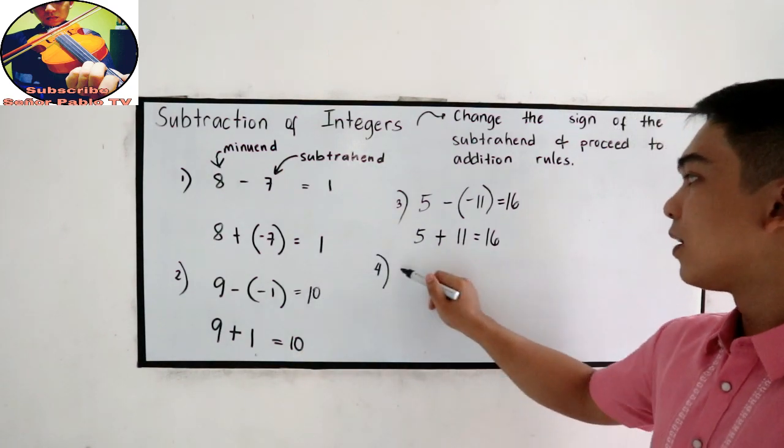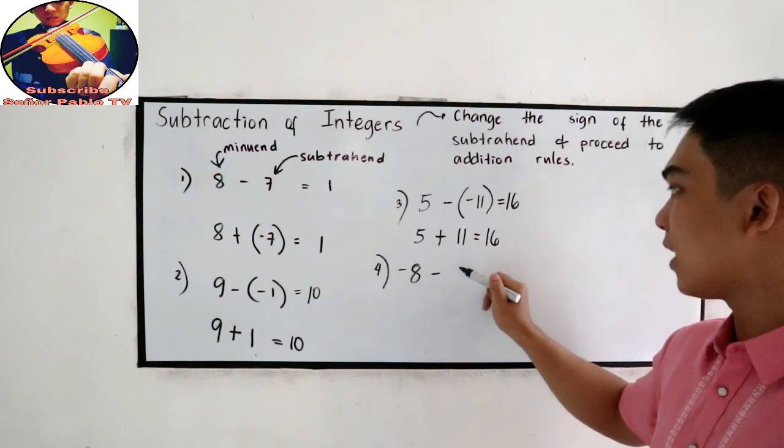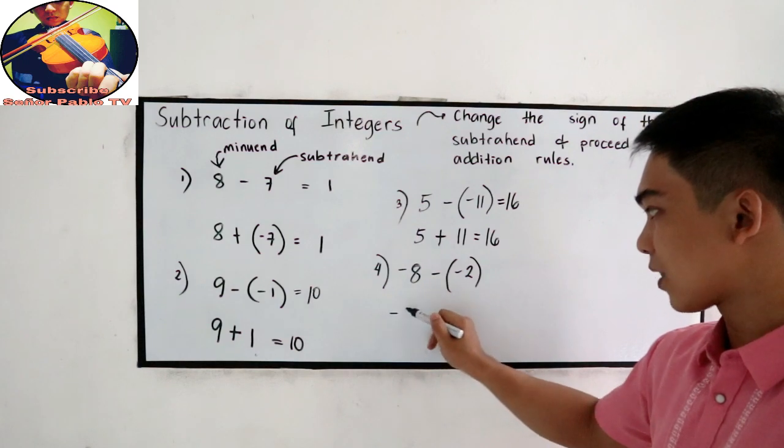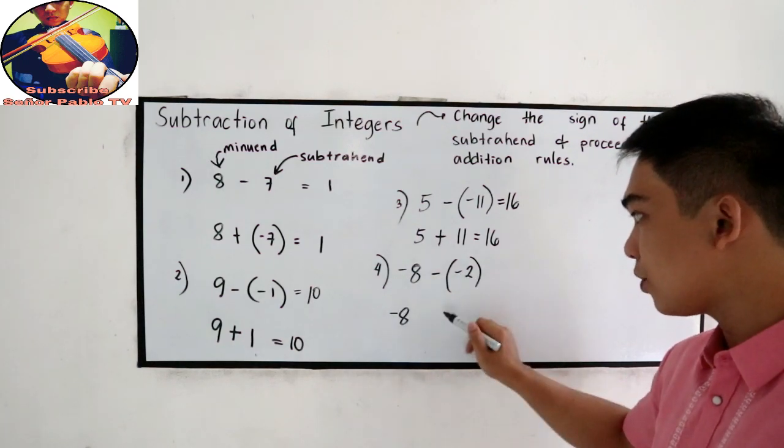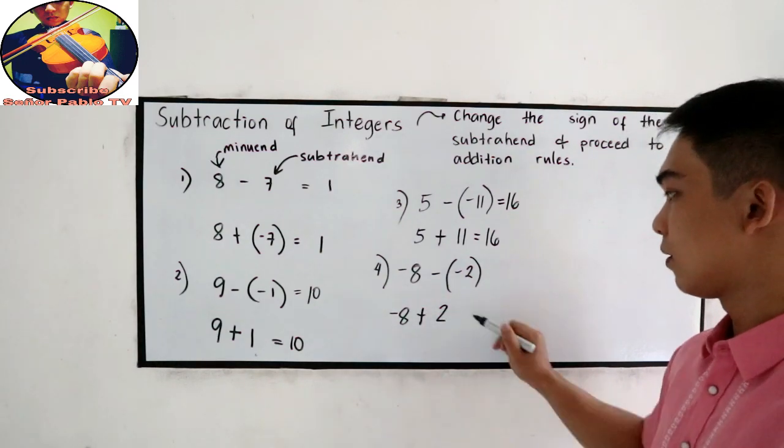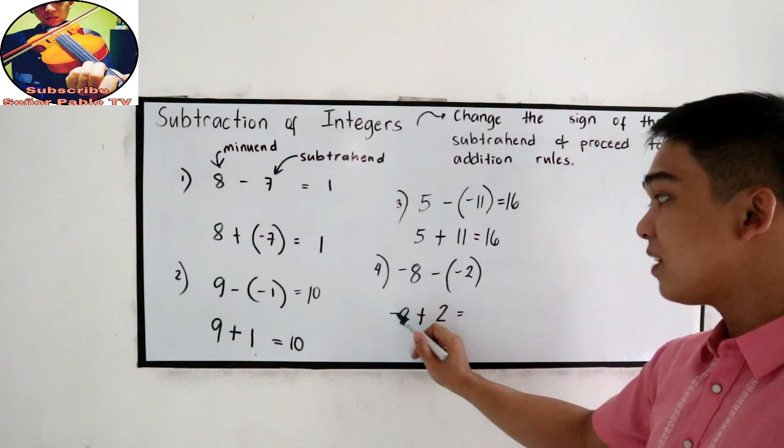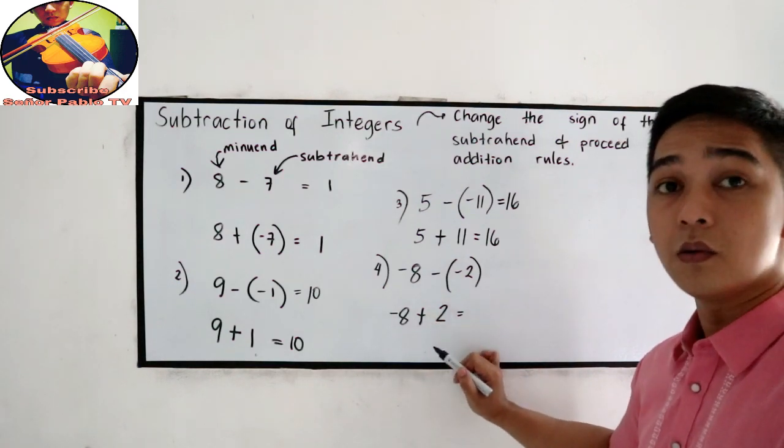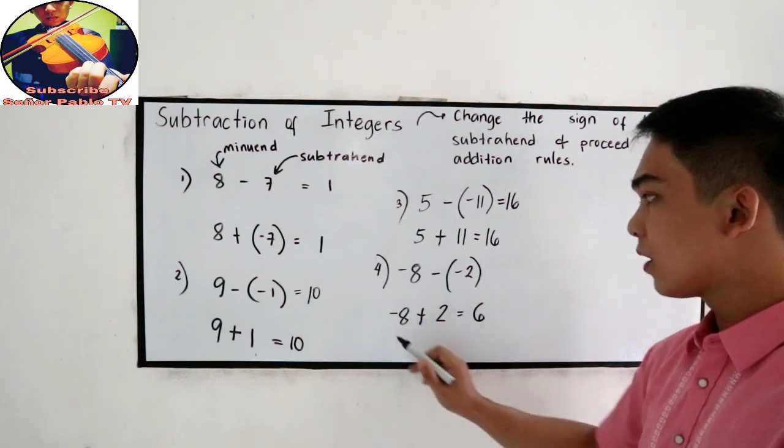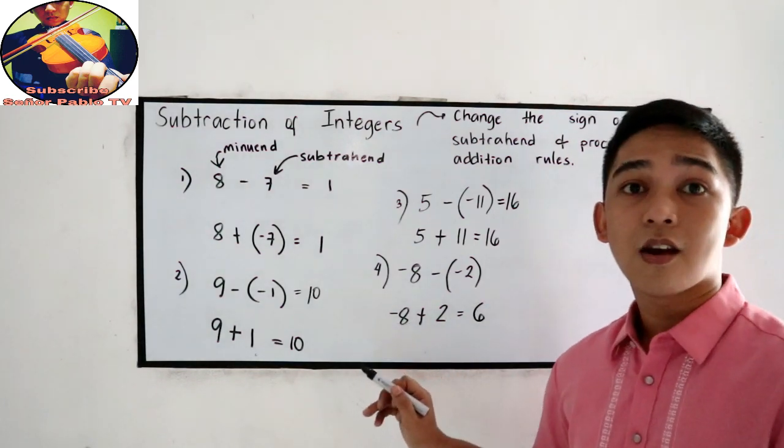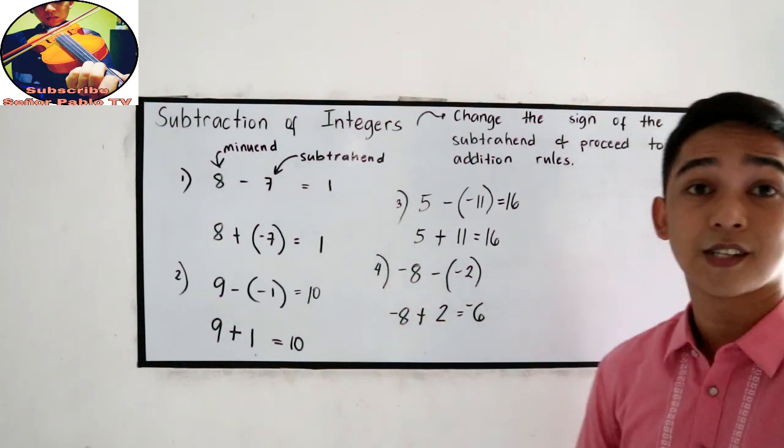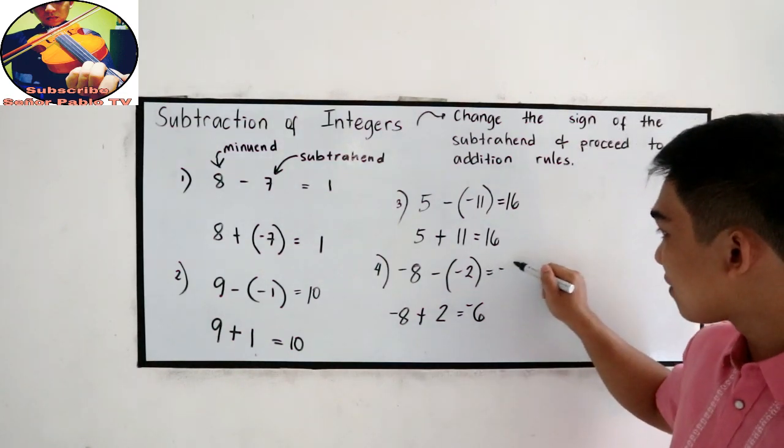Number 4. Negative 8 minus negative 2. Copy the minuend, negative 8. Change the sign of negative 2, that will become positive 2. Then proceed to addition. Unlike signs, negative 8 and positive 2. So subtract, 8 minus 2, that is 6. Then greater absolute value, 8 is greater, so that is negative 6.